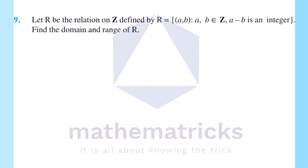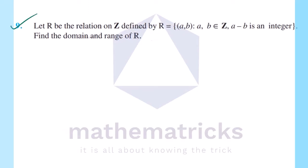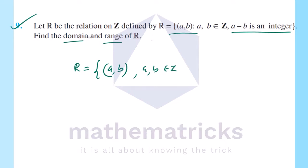Next, the ninth question: let R be the relation on Z defined by R = {(a,b)} such that a, b belongs to Z and a−b is an integer. Find the domain and range of R. The set Z is the collection of integers — negative numbers, zero, and positive numbers.